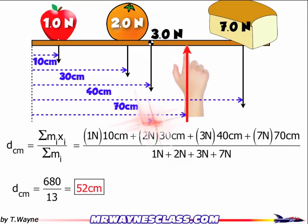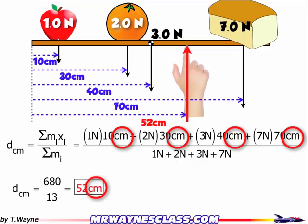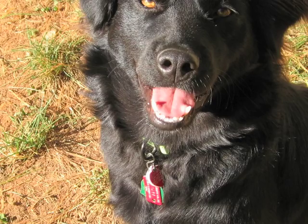So my x is 52 centimeters. That's where I need to hold it up, right there at the center of mass of this whole collection. That's where I've got to apply my upward force. And remember, whatever units you put in for the distance, you get the same unit out for the distance.